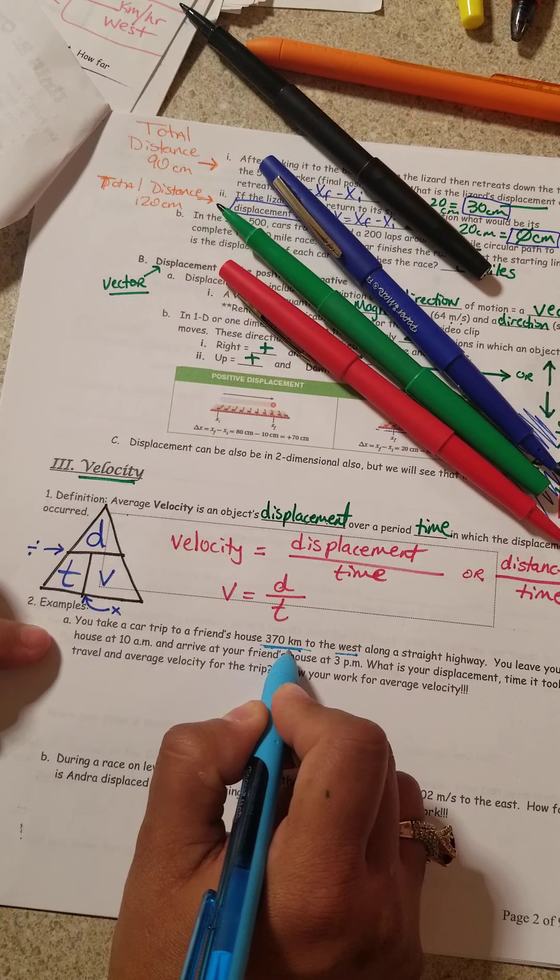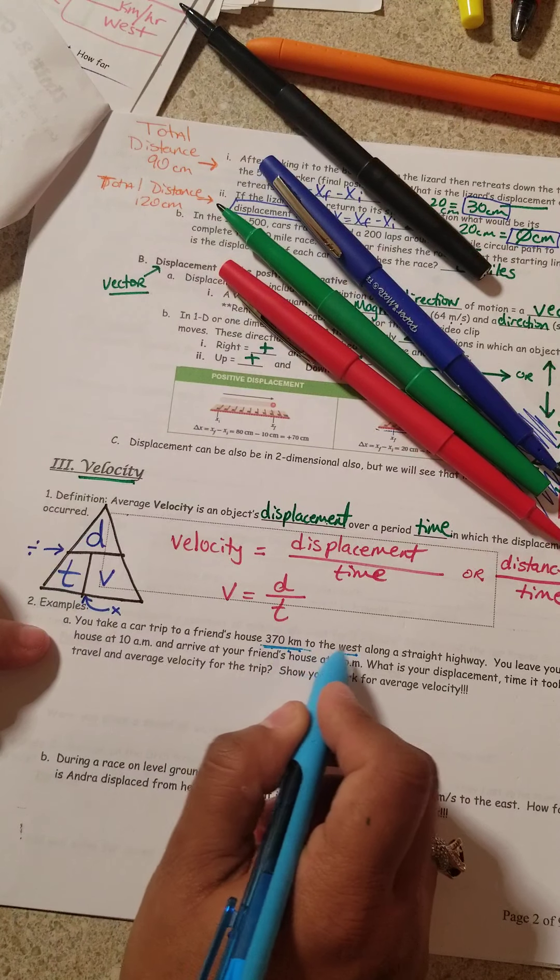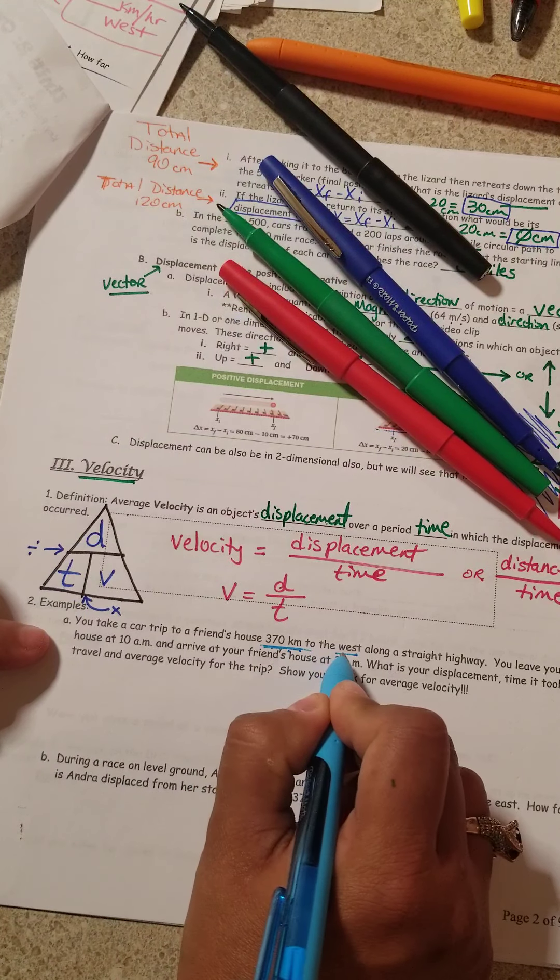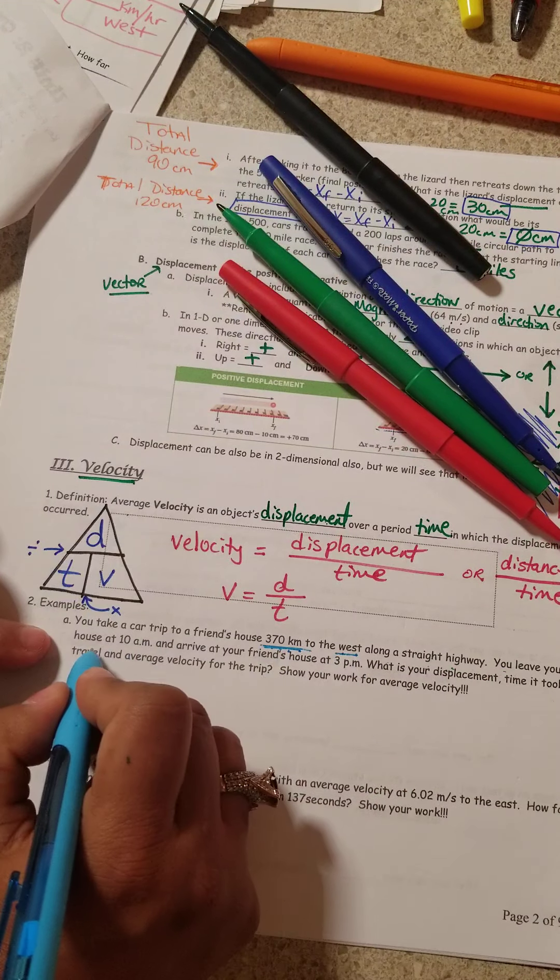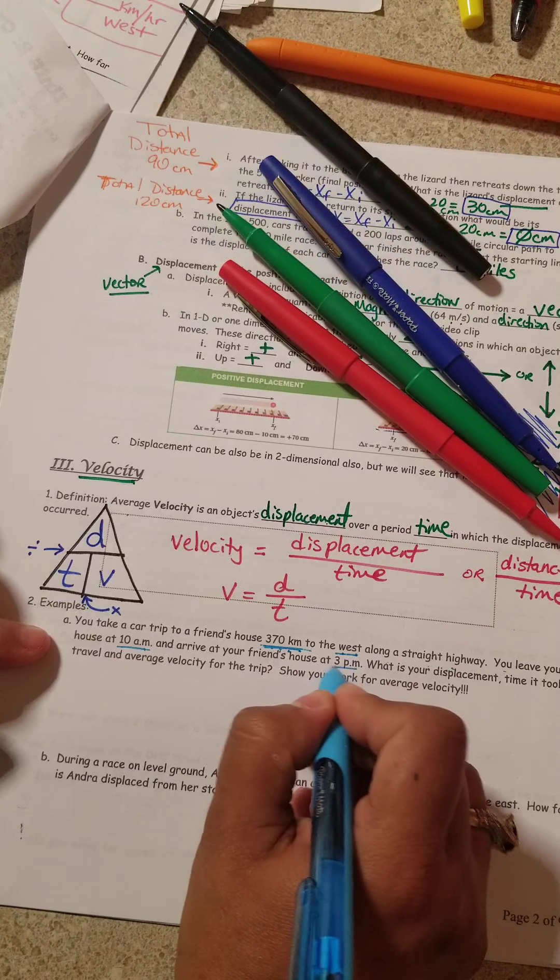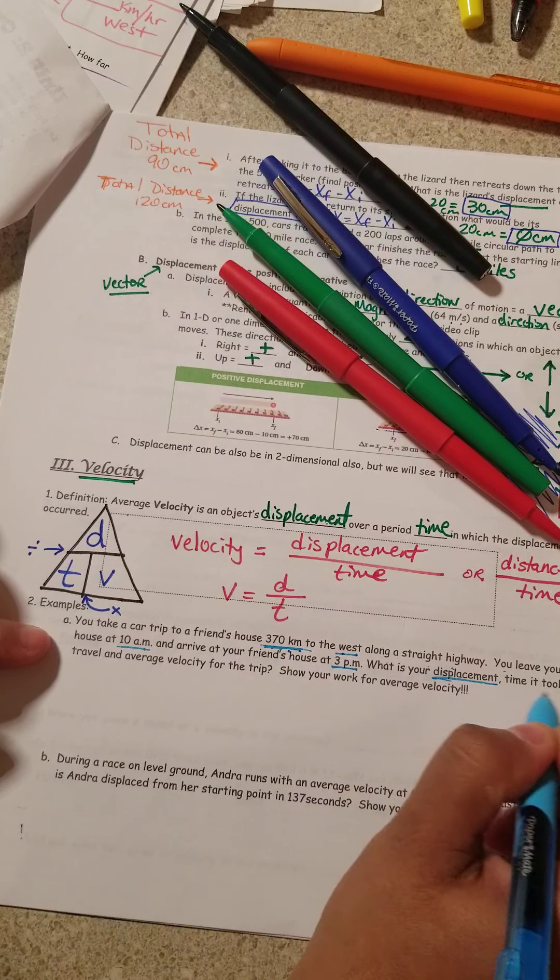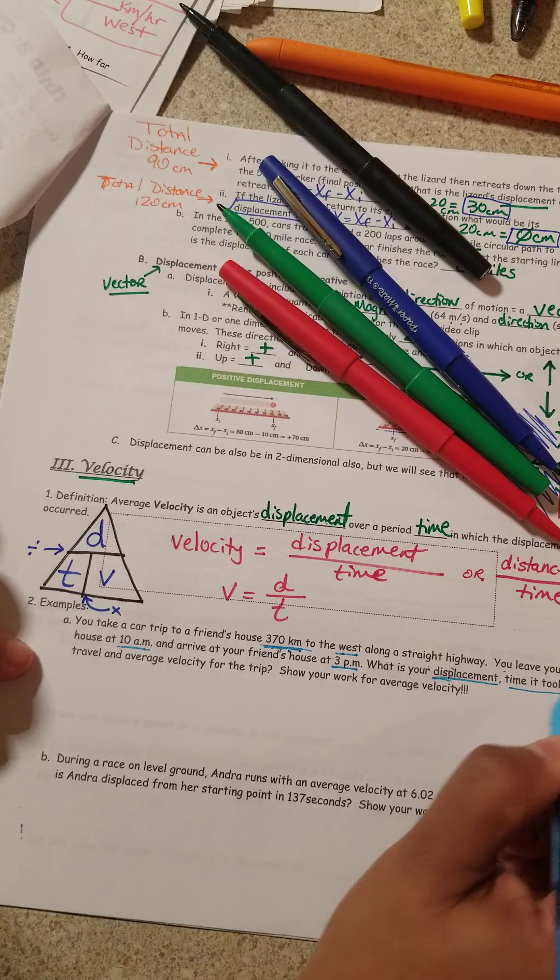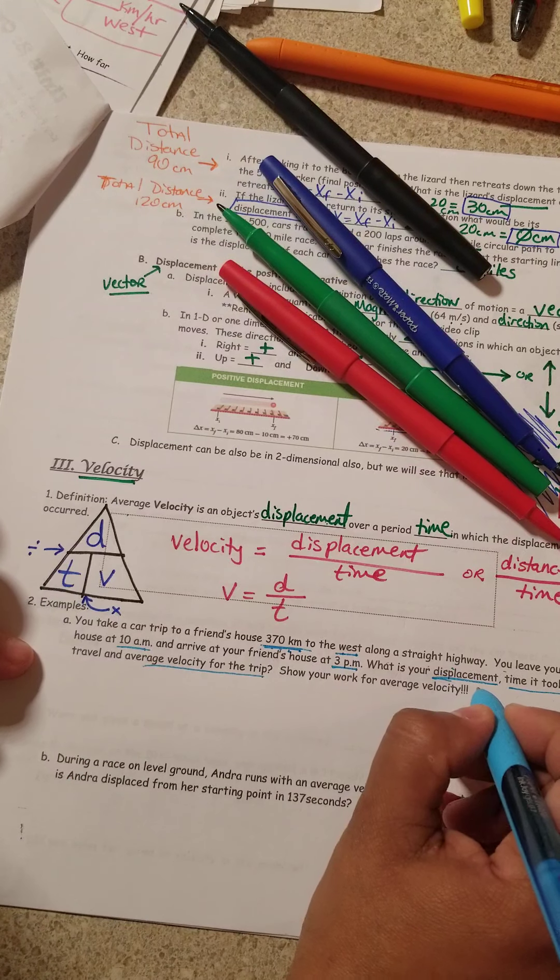Distance is a scalar without direction. Displacement has direction. Not a problem. Along a straight highway. You leave your house at 10 a.m. You arrive to your friend's house at 3 p.m. What is your displacement? The time it took for you to travel and the average velocity of the trip?